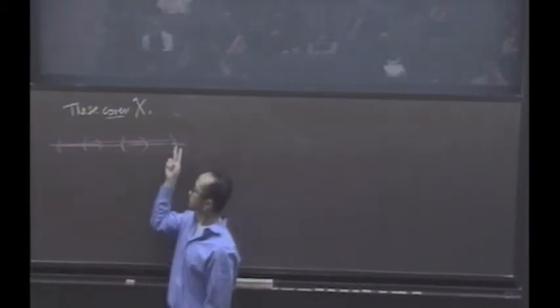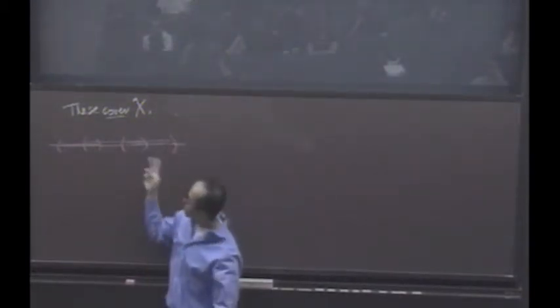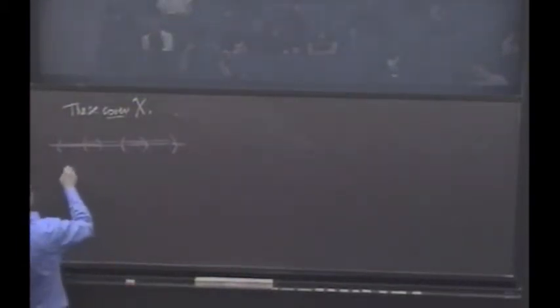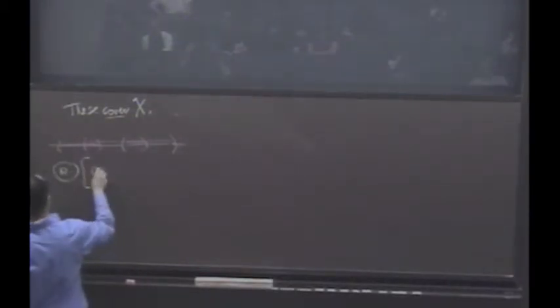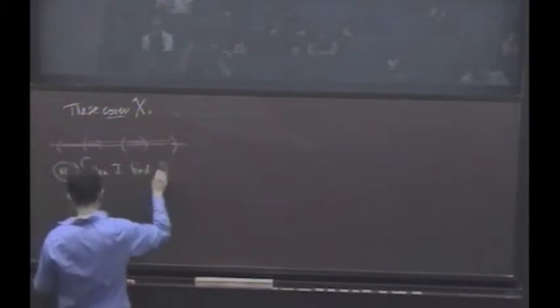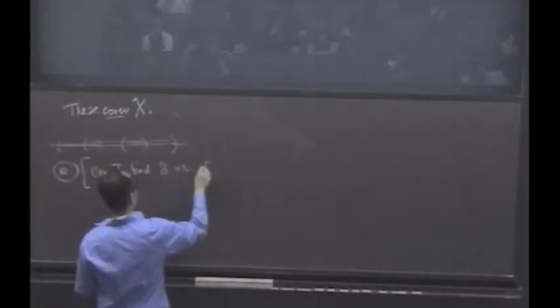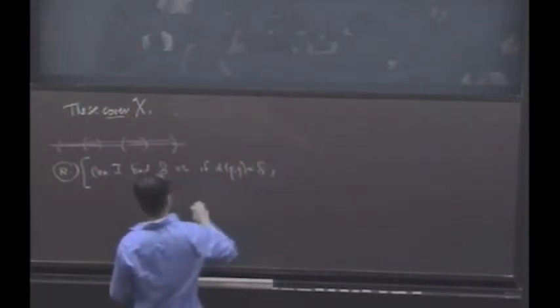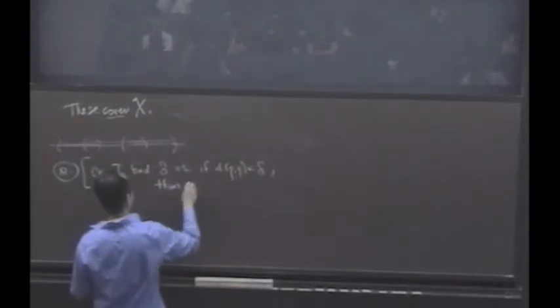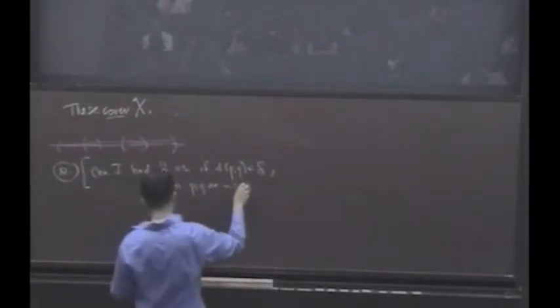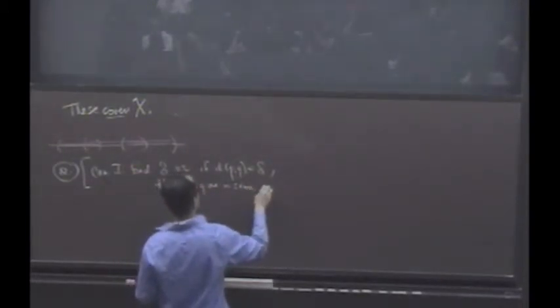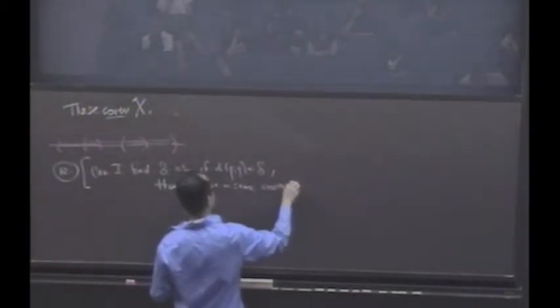Would you agree that that ought to be true? If it were true, here's the claim. So here's a question, and then I'll show you if we could answer this question, we'd be done. So can I find a delta such that if the distance between two points is less than delta, then P and Q are in the same element of the cover, in the same cover element?